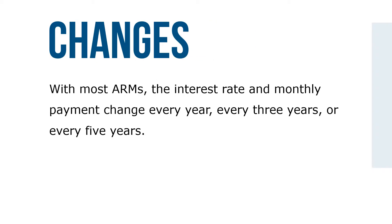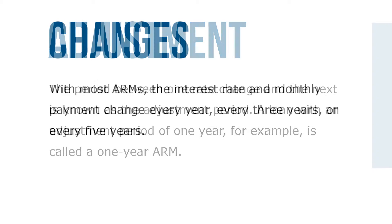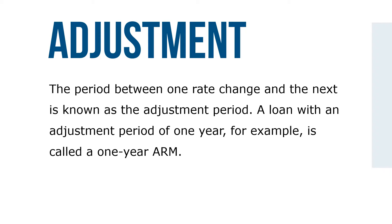With most ARMs, the interest rate and monthly payment change every year, every three years, or every five years. The period between one rate change and the next is known as the adjustment period.